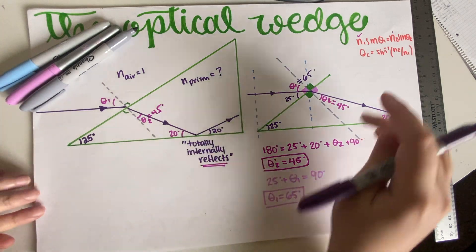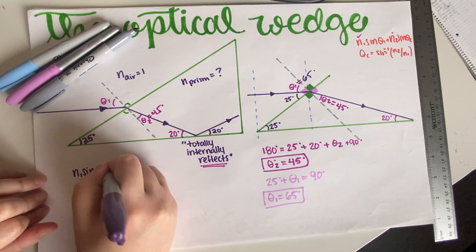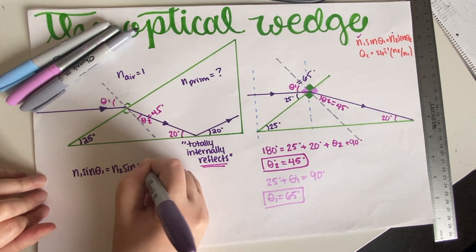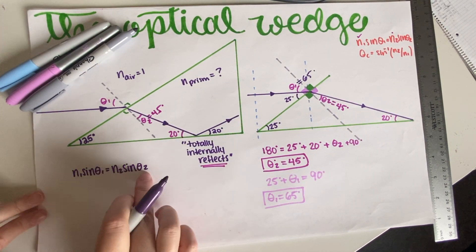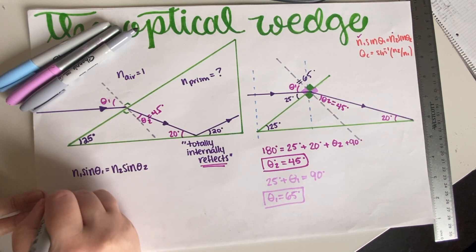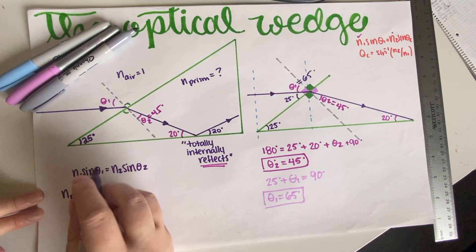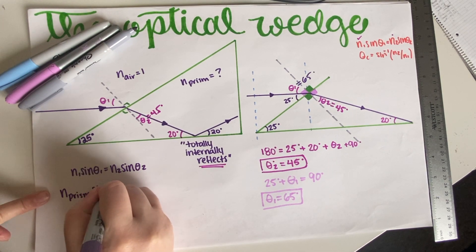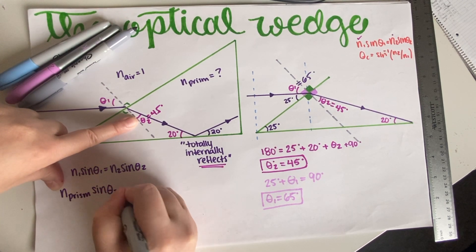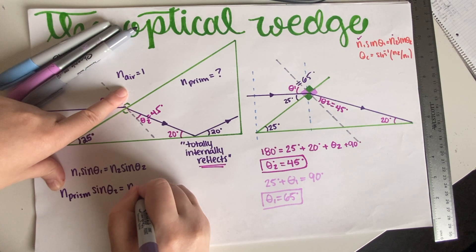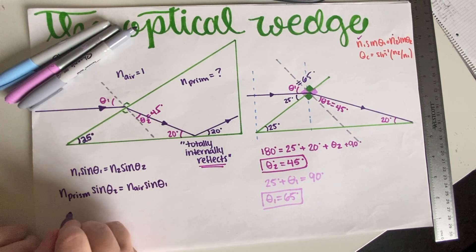So now we just have to use our equation: n1 sin θ1 equals n2 sin θ2. We want to find n prism, so n prism sin—and the prism is the one with the angle number two—is equal to n air sin one.